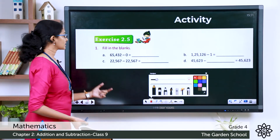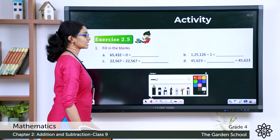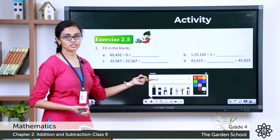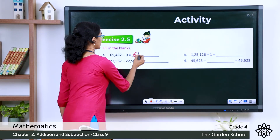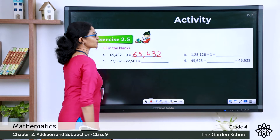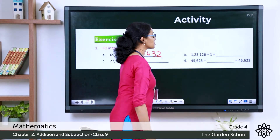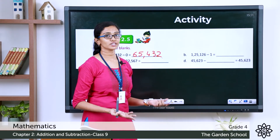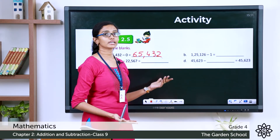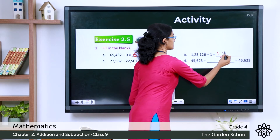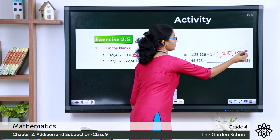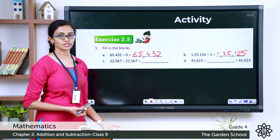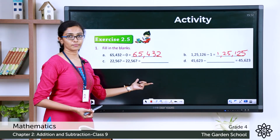Fill in the blanks. Question A: 65,432 minus 0. From the property of zero, any number minus 0 is the number itself, so the answer is 65,432. Question B: 1,25,126 minus 1. Any number minus 1 gives the predecessor of the given number, so the answer is 1,25,125.